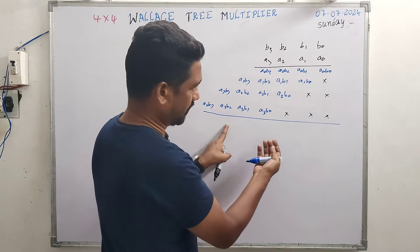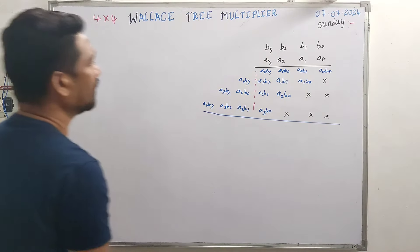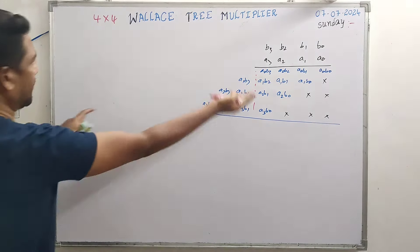The Wallace Tree multiplier suggests a small modification in this matrix — a column-wise and row-wise rearrangement. Up to a certain part the arrangement is the same; there is a small modification in the rearrangement.